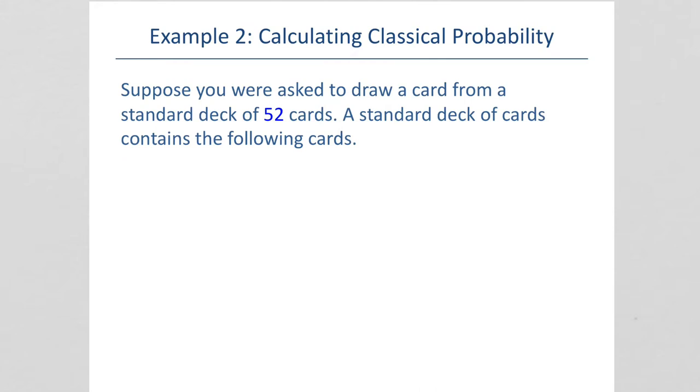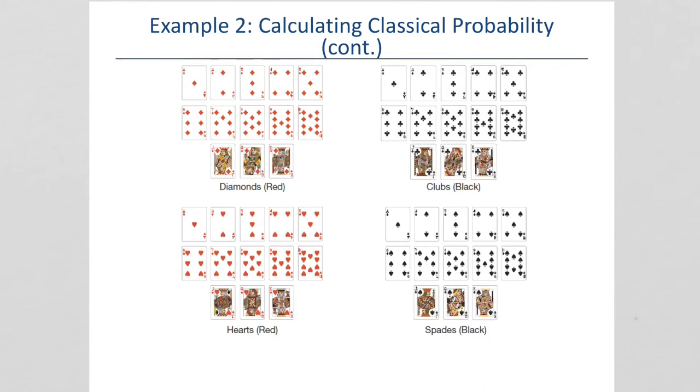Suppose you were asked to draw a card from a standard deck of 52 cards. A standard deck of cards contains the following. We have red cards. They're the diamonds or the hearts. There's black cards. They're clubs or spades.